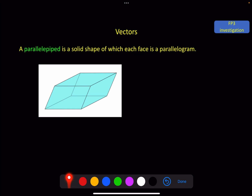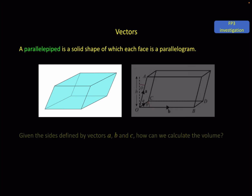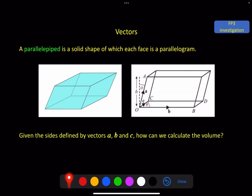But first, let's make sure we see how the vectors connect here. The vectors we can use to define the shape by considering this edge, this edge, and this edge — the three non-parallel edges — and that is enough to define the parallelepiped. To find the volume, we need the area of the base shape, the parallelogram, and the perpendicular height h.